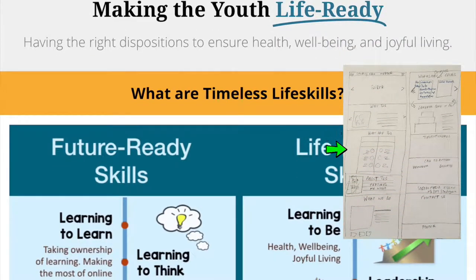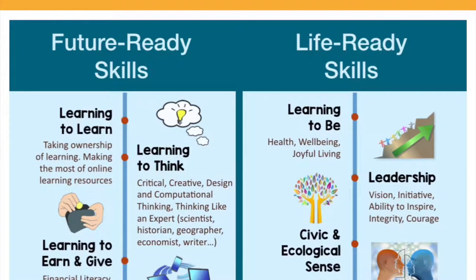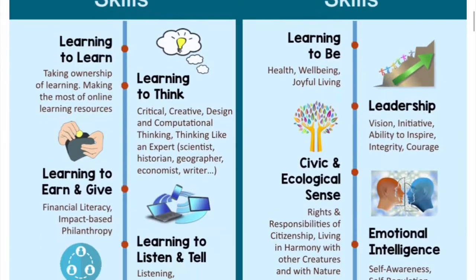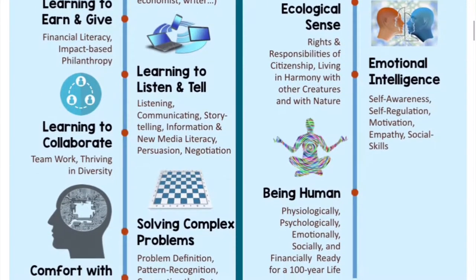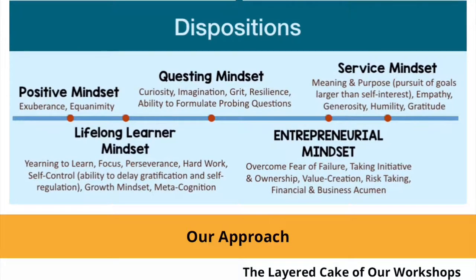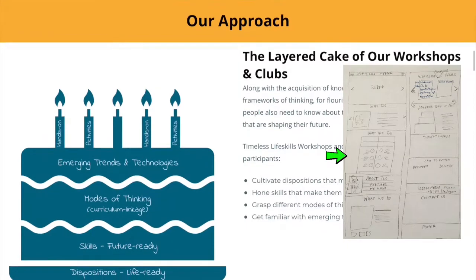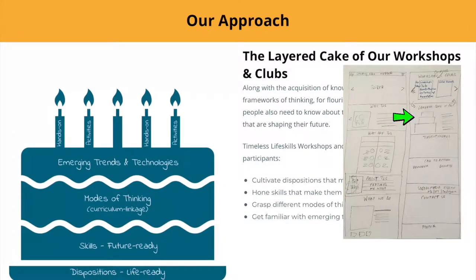And then, adhering to the storyboard, we are talking about what are Timeless Life Skills. And here is a poster I created for this to say that here are future ready skills like learning to learn, learning to think, etc., and life ready skills—learning to be, leadership, emotional intelligence, and so forth—and then dispositions that are really important to shine in the 21st century. And this is the approach, this is that layered cake, and I will come back to the layered cake in a bit.